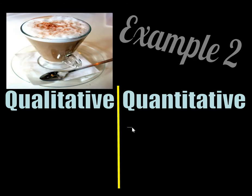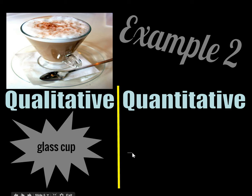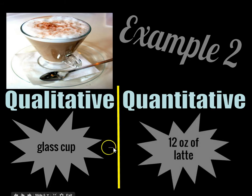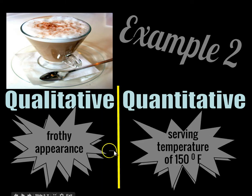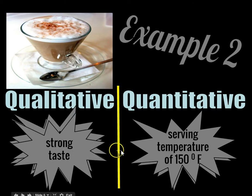We have a latte there for us. A qualitative description would be that it's in a glass cup. A quantitative would be that it has 12 ounces of latte. A qualitative would be that it has a frothy appearance. A quantitative would be that the serving temperature is 150 degrees Fahrenheit. A qualitative would be that it has a really strong taste.